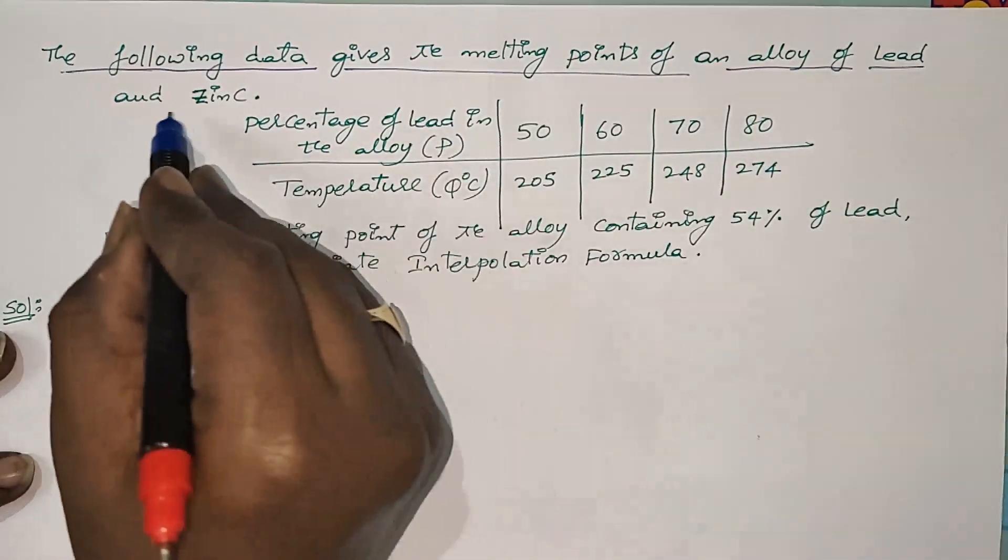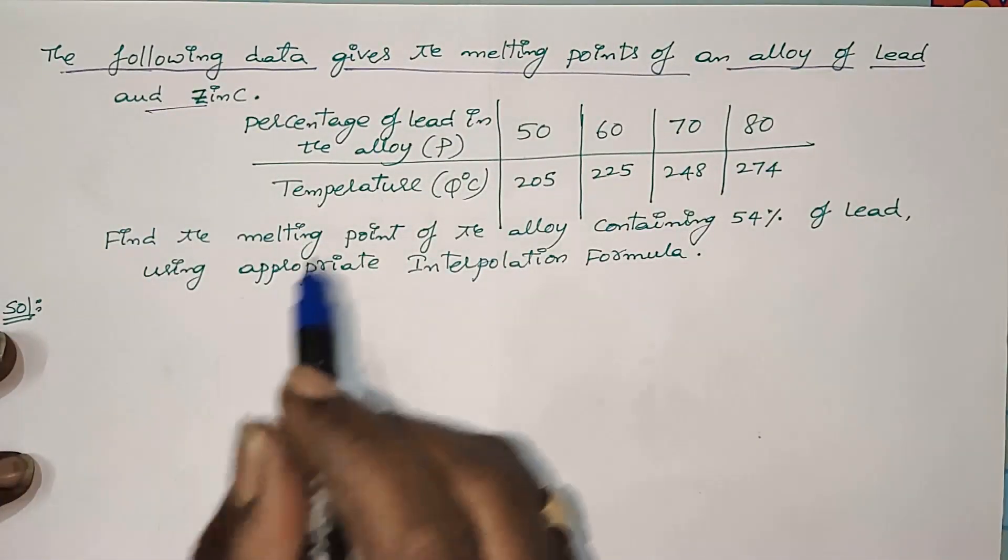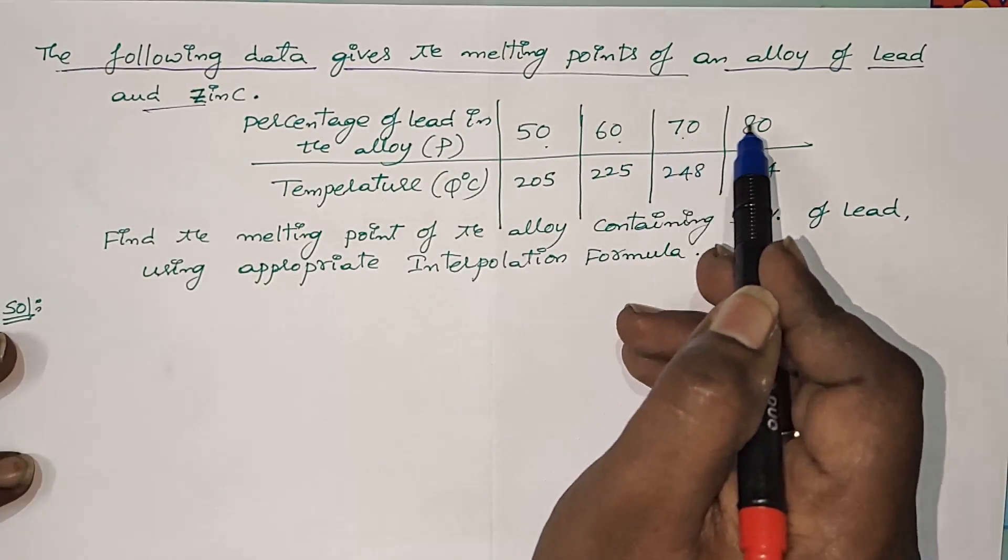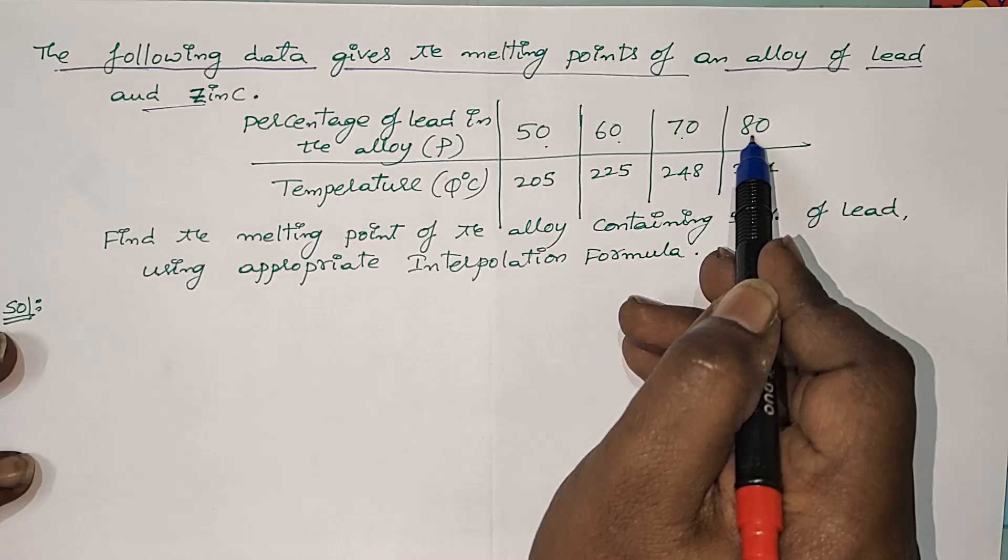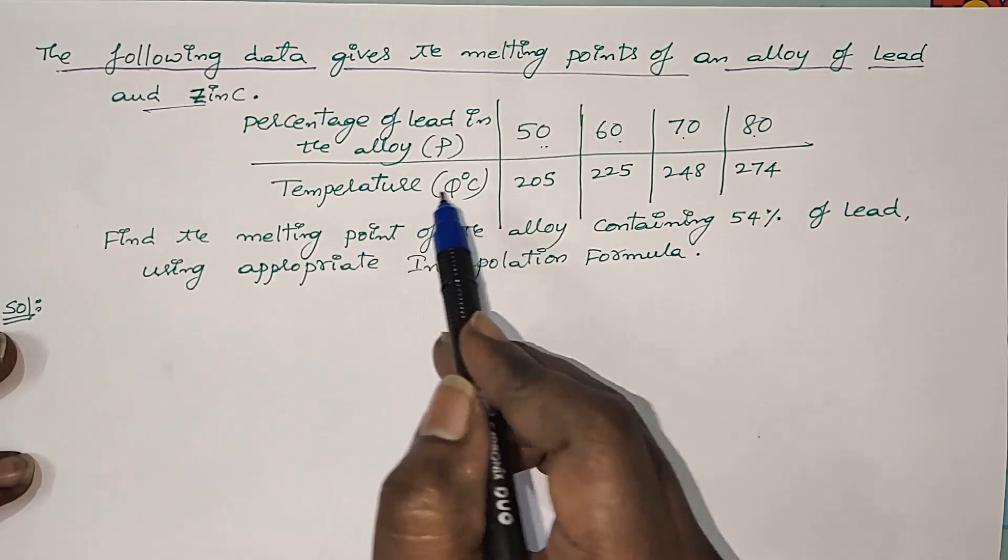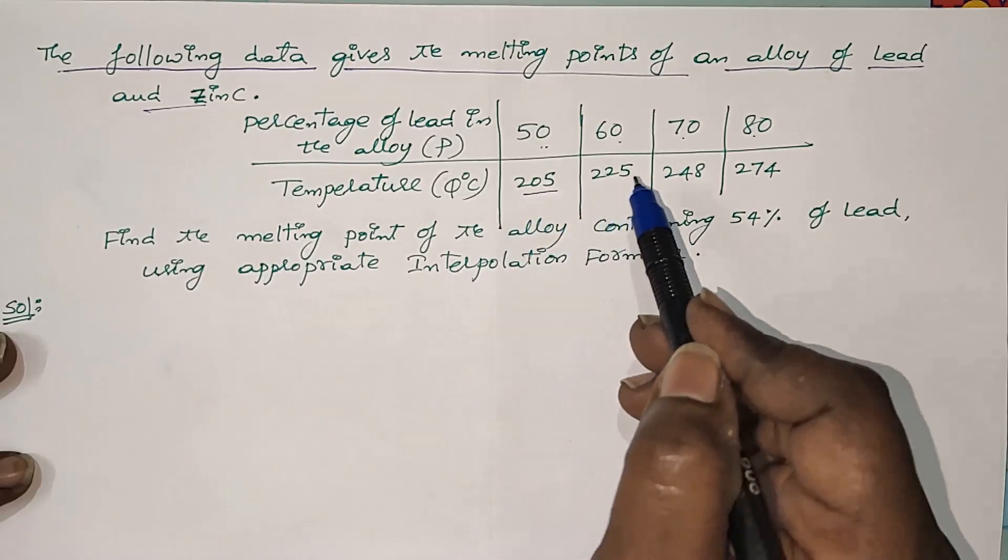The percentage of lead in the alloy is given as 50%, 60%, 70%, and 80%. To get these percentages of lead in the alloy, the temperature is required as 205 degrees, 225 degrees, 248 degrees, and 275 degrees respectively.